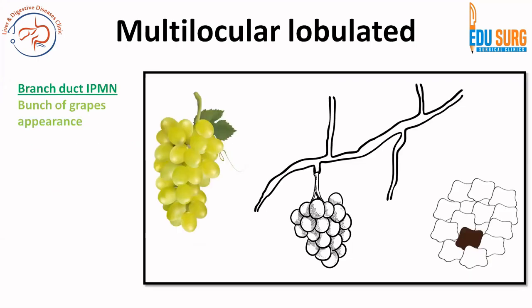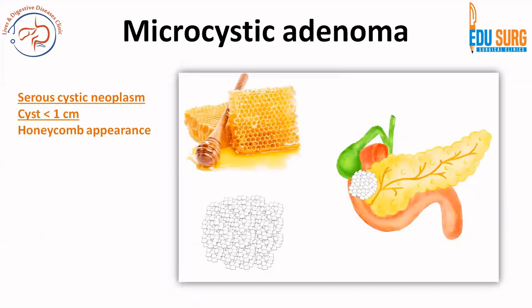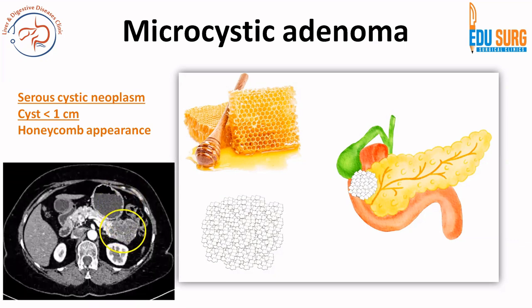For examples: multilocular lobulated cysts are oblong — think of a grape, which is oblong. Branch duct IPMN has an oblong multilocular lobulated appearance, the classical 'bunch of grapes' appearance. Cysts less than one to two centimeters are microcystic; more than two centimeters are macrocystic. Serous cystic neoplasm is also known as microcystic adenoma, and its classical appearance is the 'honeycomb appearance' — you can see this in the tail of the pancreas in imaging.